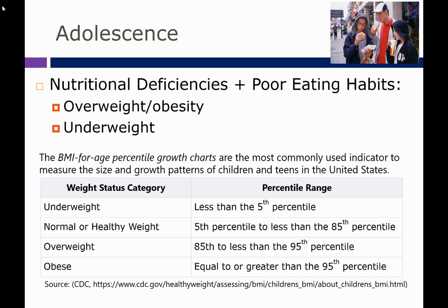Nutritional deficiencies plus poor eating habits in our typical western culture often result in overweight and obesity. On the other end of the spectrum, we do see underweight in adolescence, particularly among those with eating disorders that result in weight loss. These are two conditions we want to be aware of and always keep in the back of your mind as a nutrition or health-related professional.